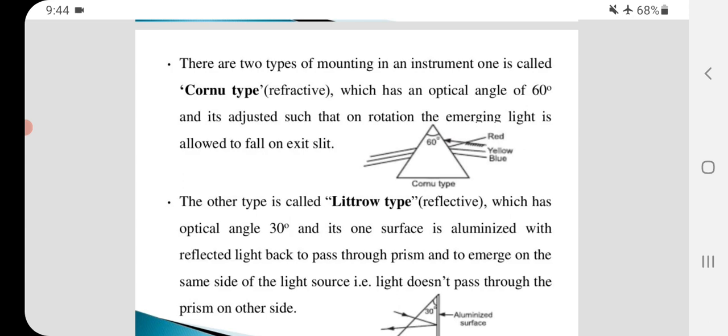The other type is called Litrotype refractive, which has optical angle of 30 degree and one surface is aluminized with reflected light back to pass through prism and to emerge on the same side of light source.